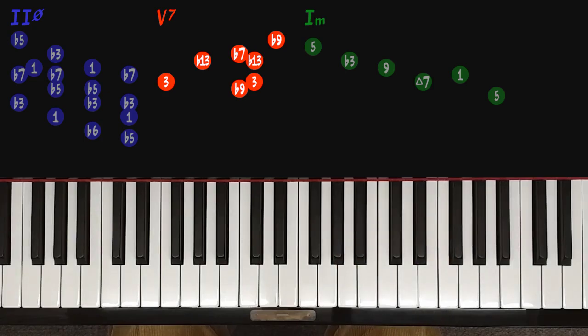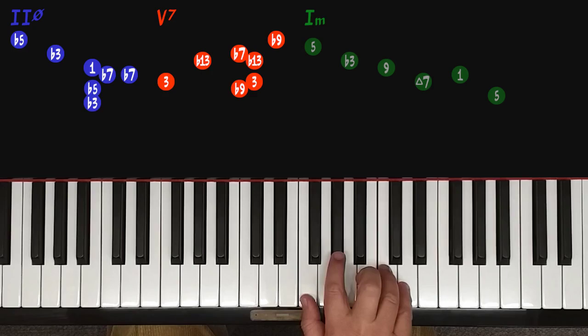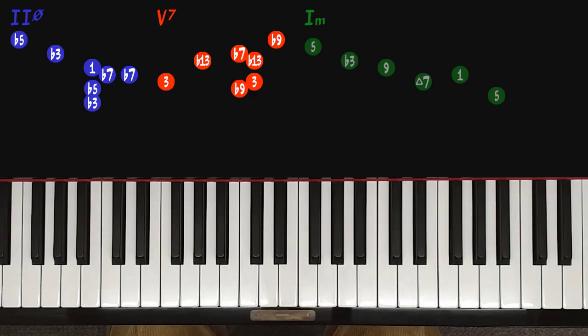Now let's for a moment review the 2 chord Dm7b5. The basic chord has the exact same notes as the chord Fm6. So we can tell that the voicings of both chords, 2 and 5, are based on the same kind of voicing structure, which is a minor 6th chord, but built on different roots.